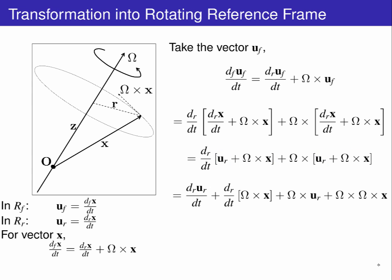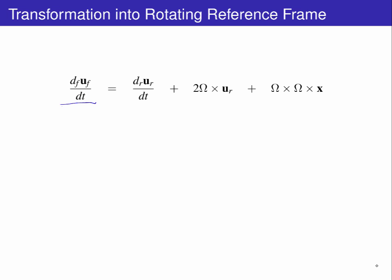We separate this out to get the acceleration in the rotating frame, the rate of change of omega cross x in the rotating frame, the cross-product of omega and the velocity in the rotating frame, and this triple-vector cross-product omega cross omega cross x. Now, omega is time invariant, meaning the time derivative here only applies to x, giving a second omega cross U_r term.